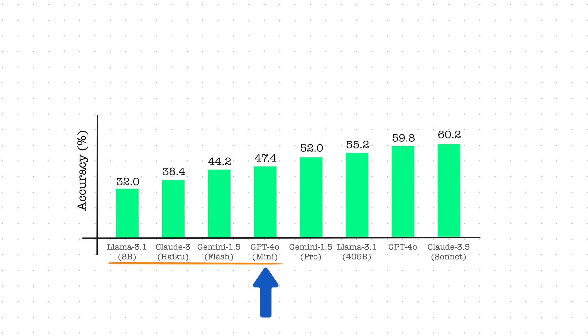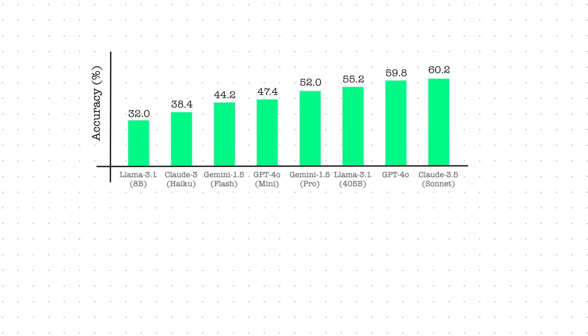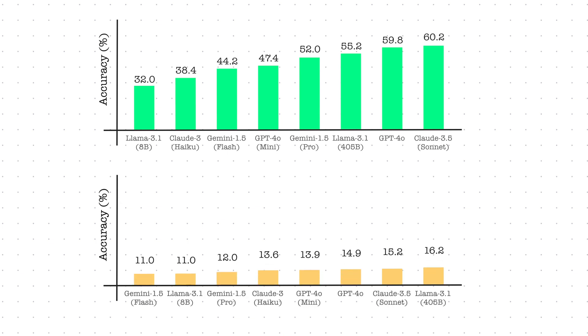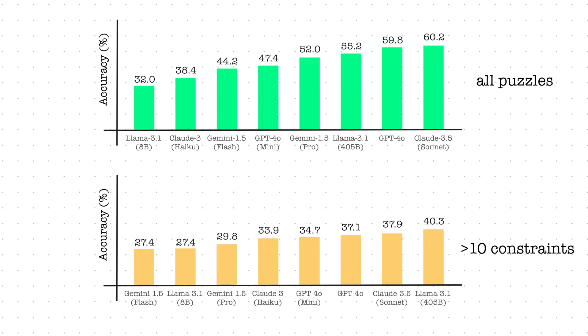Looking at the smaller models, GPT-4o Mini scored the best with an accuracy of about 47.4%. Now, these results cover all puzzles — some are easier, some are harder. So let's only look at results for difficult puzzles with more than 10 constraints. Interestingly, not only did the best result drop down to 40%, but the ranks changed as well. Llama is now outperforming all other models. And surprisingly, Gemini Pro is now doing worse than the two small models, Mini and Haiku. Our best performing models solve only about 60% of all puzzles, which leaves a big room for improvement.